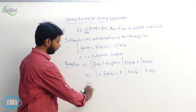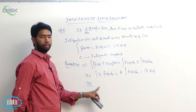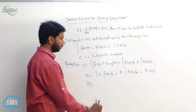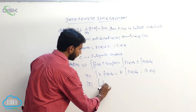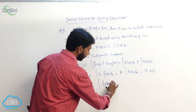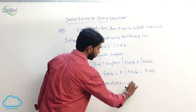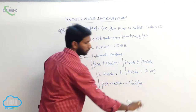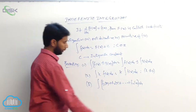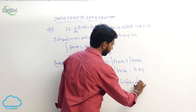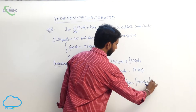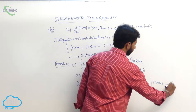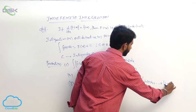The third property: if f₁(x), f₂(x), ..., fₙ(x) are integrable functions, then the integral of f₁(x) + f₂(x) + ... + fₙ(x) dx equals integral of f₁(x) dx plus integral of f₂(x) dx plus ... plus integral of fₙ(x) dx.